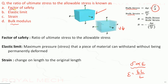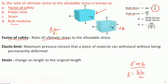Coming to factor of safety: the ratio of ultimate stress to the allowable stress is known as factor of safety. Therefore, as per the question, the ratio of ultimate stress to the allowable stress is known as factor of safety. Option A is the correct option.